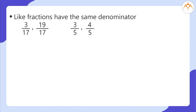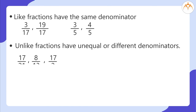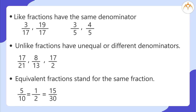Like fractions have the same denominator — examples: 3/17, 19/17, and 3/5 and 4/5. Unlike fractions have different denominators — examples: 17/21, 8/13, 17/2. Equivalent fractions stand for the same fraction — for example, 5/10 = 15/30.